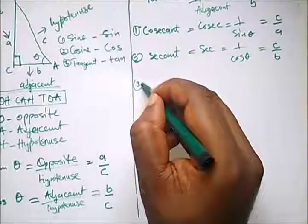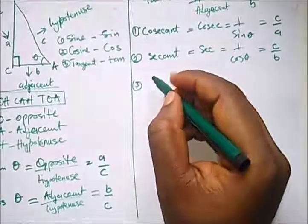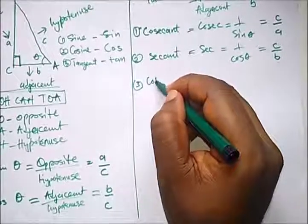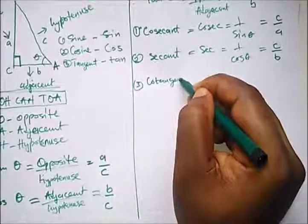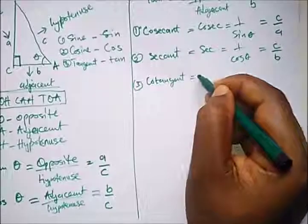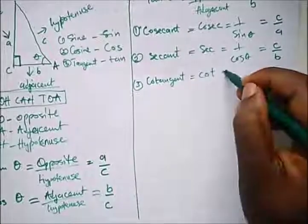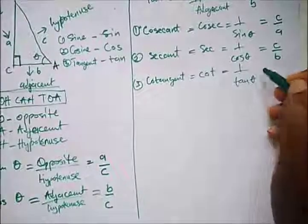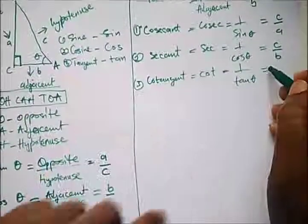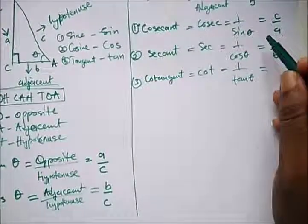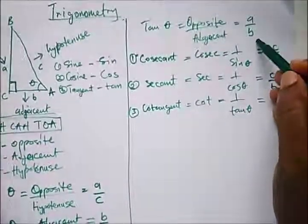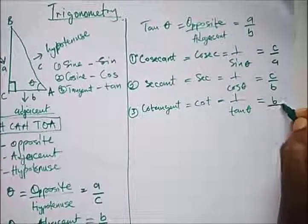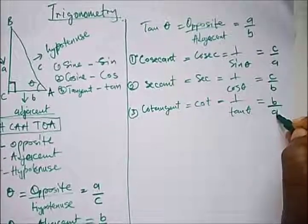The inverse of tan is what we know as cotangent, in short form called 'cot', which is the inverse of tan theta. From here, we take B up and bring A down, so we have B over A.